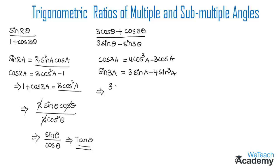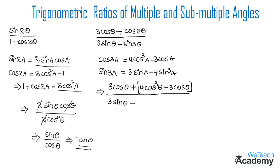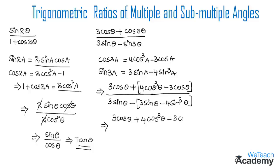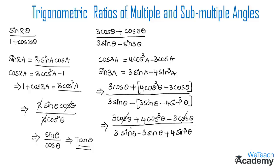Substituting, the numerator becomes 3cosθ + (4cos³θ − 3cosθ), and the denominator becomes 3sinθ − (3sinθ − 4sin³θ). Simplifying, 3cosθ and −3cosθ cancel in the numerator, and 3sinθ and −3sinθ cancel in the denominator, leaving 4cos³θ divided by 4sin³θ.